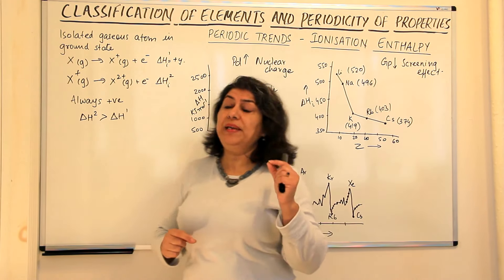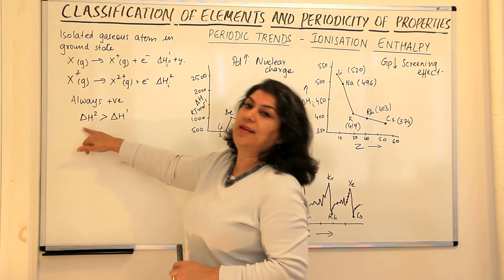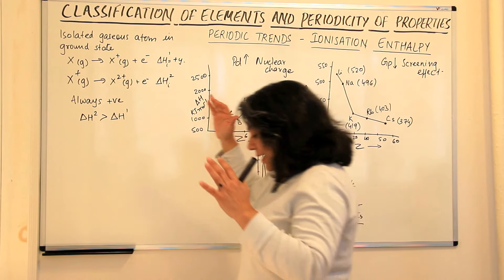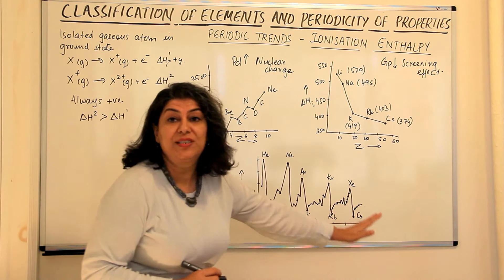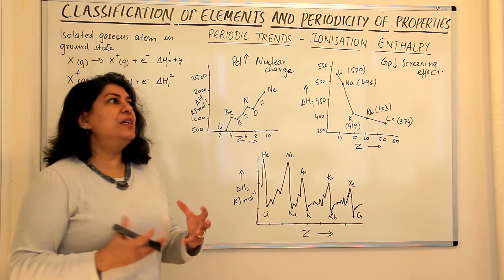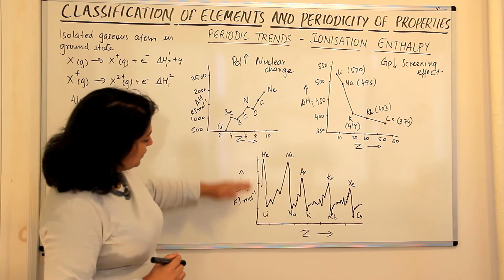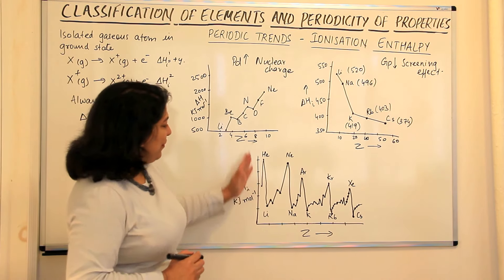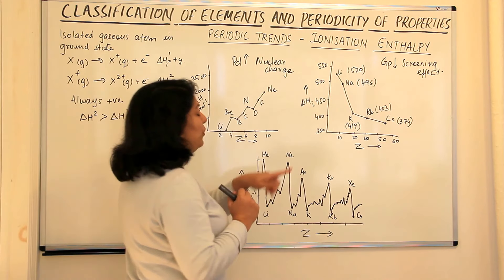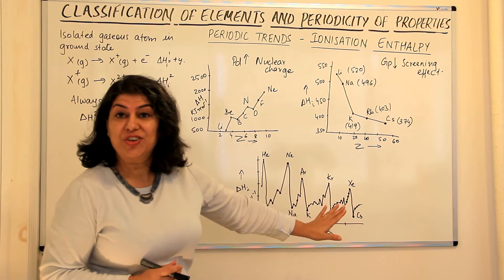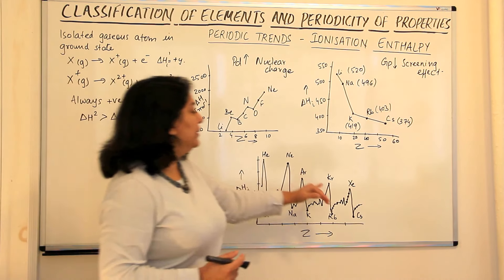This is what ionization enthalpy is. If we plot atomic numbers against ionization enthalpies for the first 60 elements, we observe a periodicity — a repetition in the pattern. We find that noble gases form peaks, meaning they have the highest first ionization enthalpies. What is the reason for this very high ionization enthalpy of noble gases?